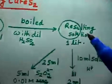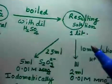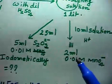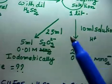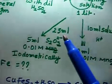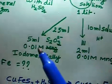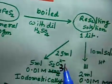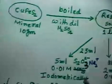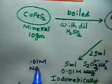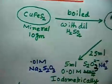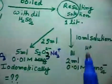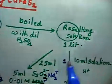Now the next part: the resulting solution is made up to 1 liter, and we are doing two titrations. In titration 1, 10 ml of solution in acidic medium is titrated with 2 ml of 0.01 M MnO₄⁻. In titration 2, 25 ml of sample is titrated with 5 ml of 0.01 M Na₂S₂O₃. So let us call this titration 1 and this is titration 2.